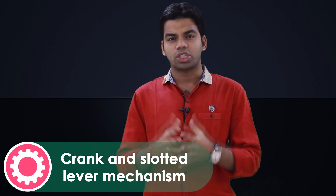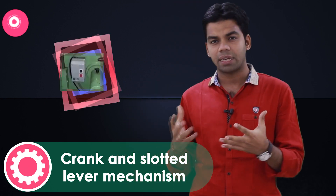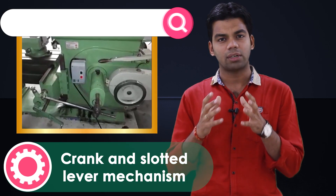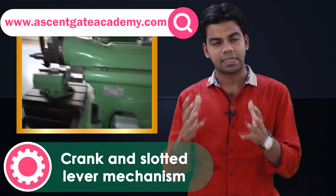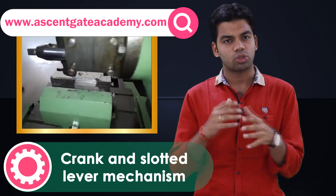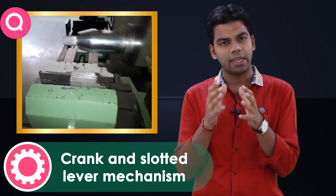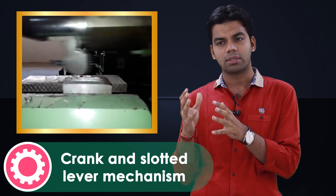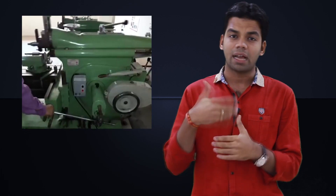In certain machine tools like shaper machines and planer machines, the cutting tool reciprocates over the workpiece and cuts it. So there we need to convert rotary motion to reciprocating motion. The input link has to be continuously rotating, but the output link — the tool — should have reciprocating motion.